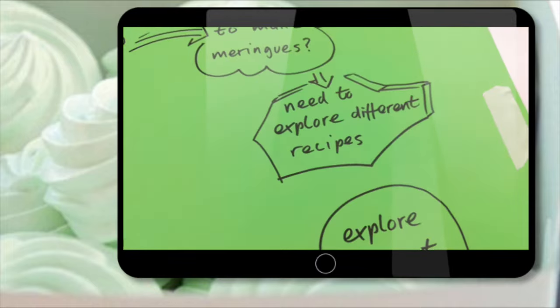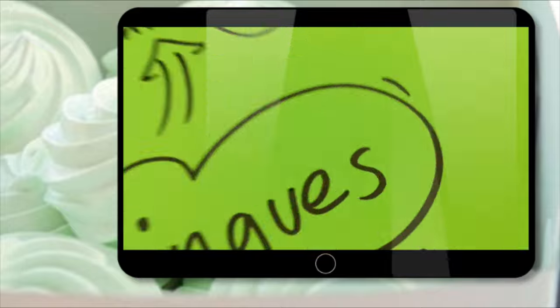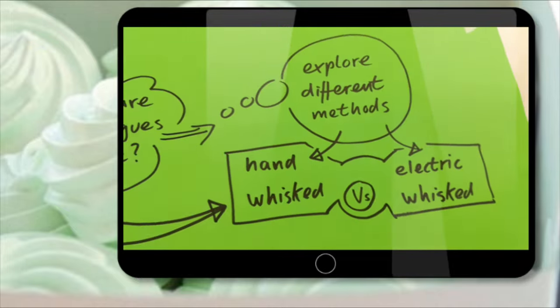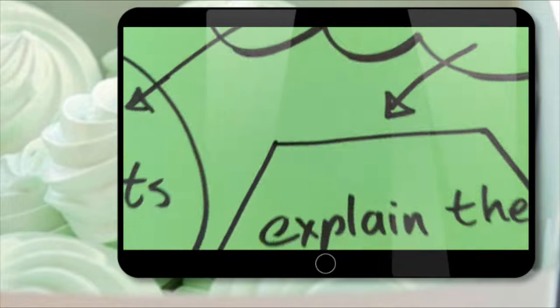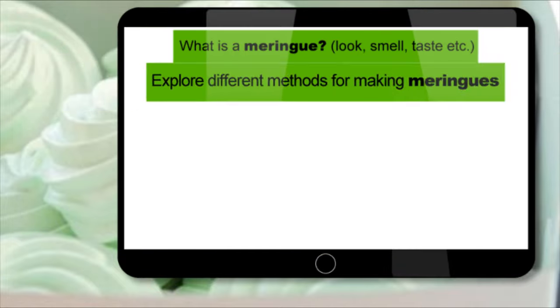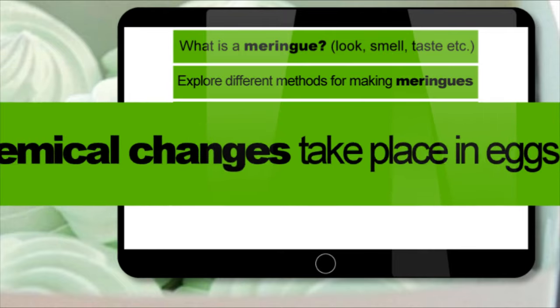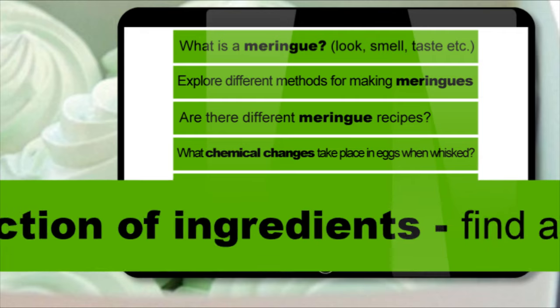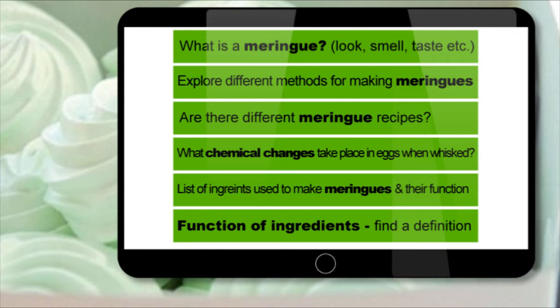Now just to summarize what I'm going to do, I'm going to take all these individual points and I'm going to list them one after the other, and these will form the headings when I start my research. So we've analyzed a brief and identified several key areas to look into. Perfect.